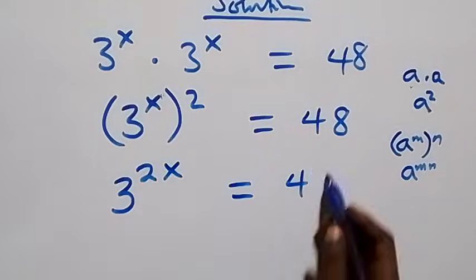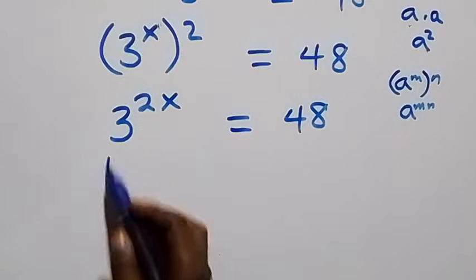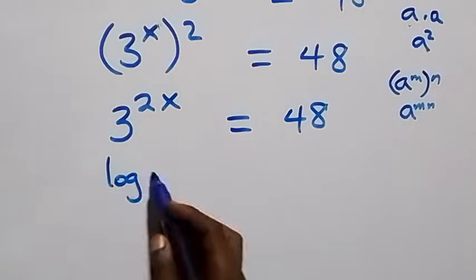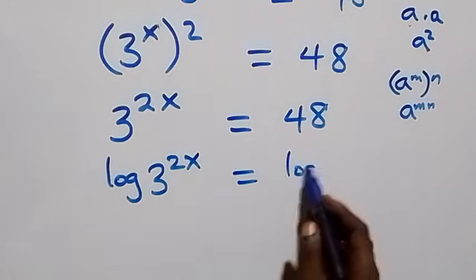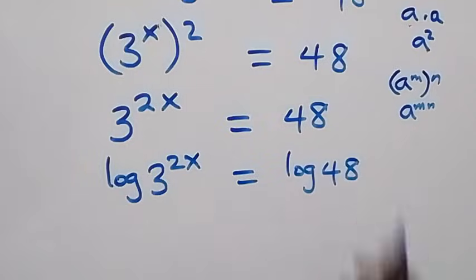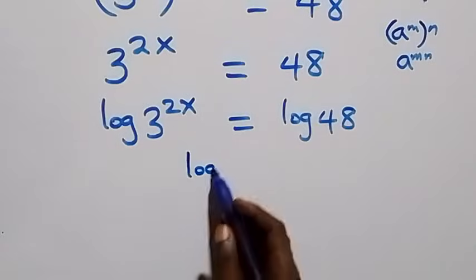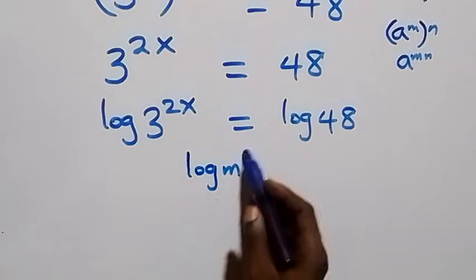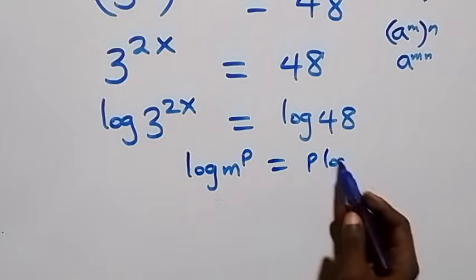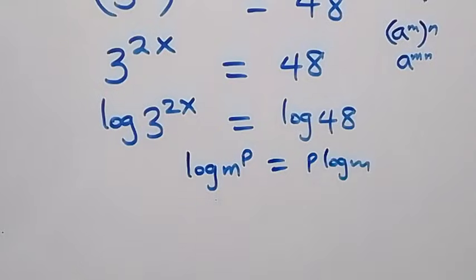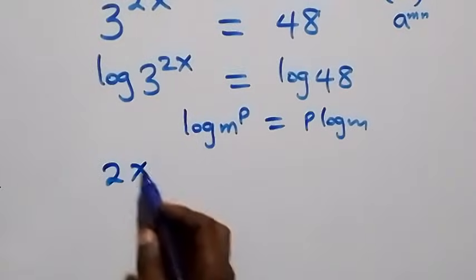From here, the next step is to take the log on both sides: log of 3 raised to power 2x equals log 48. We then apply the power rule of logarithms — log m raised to power p is the same as p log m — so this becomes 2x log 3 equals log 48.